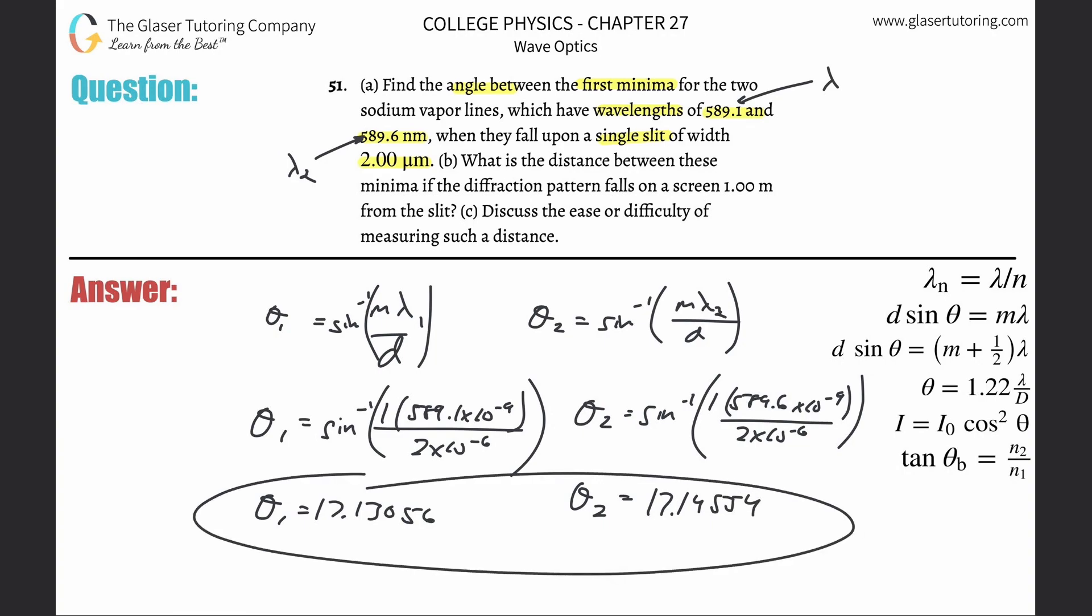Now what would you do to find the distance between them? You would just subtract. Take the larger one, theta 2, and subtract it by theta 1. Doesn't really matter if you did it the other way. Your answer would just be negative, but essentially we're taking the absolute value. So the difference in those angles is 0.015 degrees if you round. Remember I'm using exact values. That would be letter A, and then letter B.